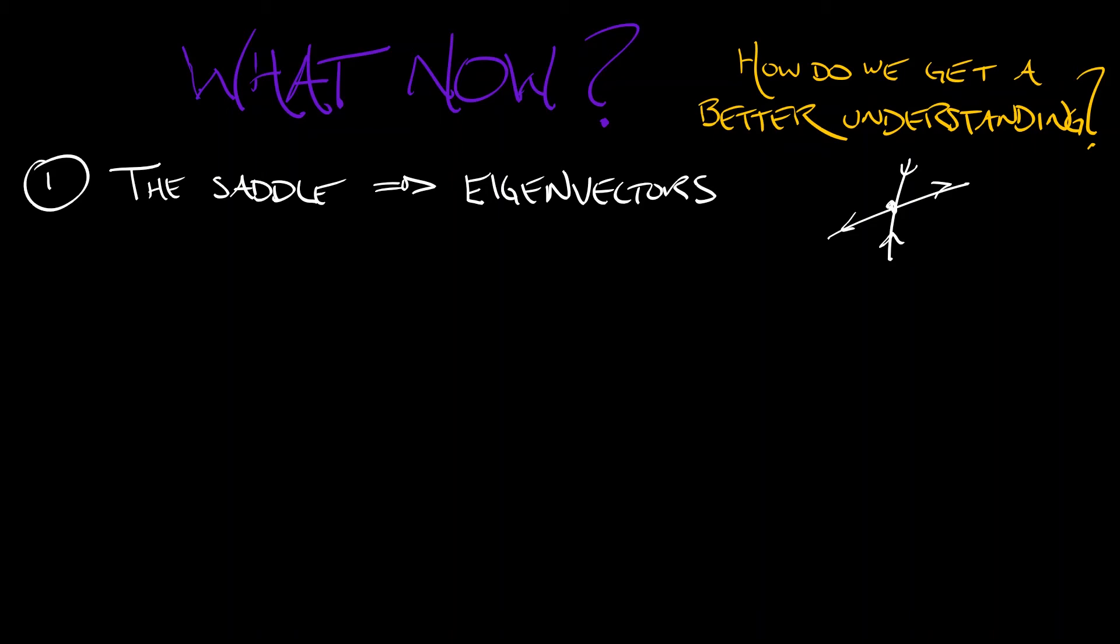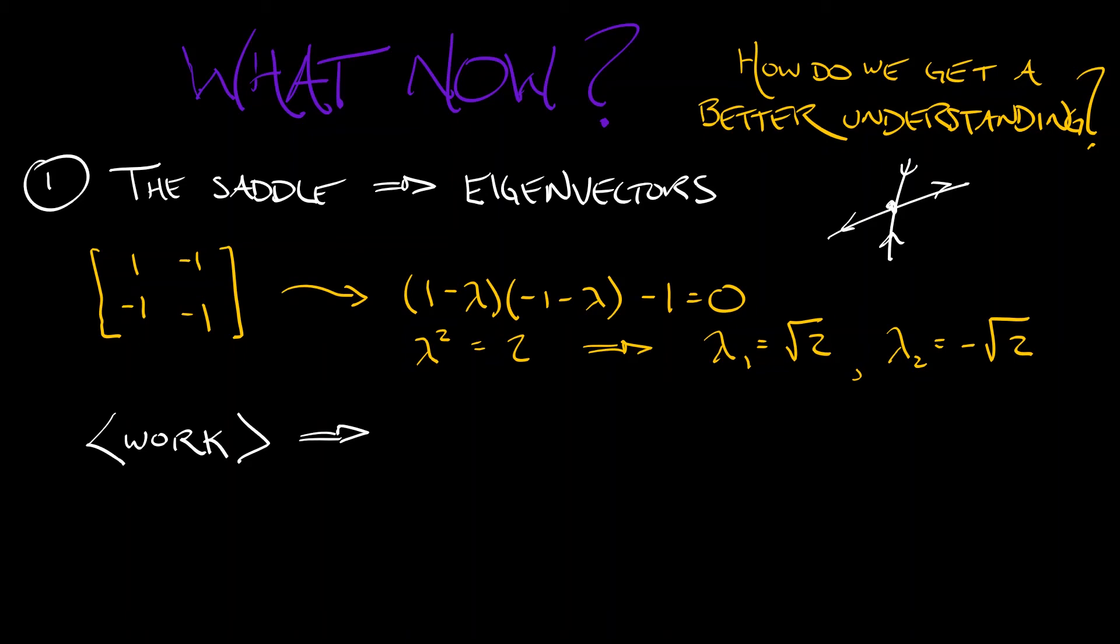So, if we do a little bit of work writing out the characteristic polynomial, we find that the eigenvalues are lambda_1 is square root of 2, lambda_2 is negative square root of 2. With additional work, we can get explicit choices for eigenvectors. And we find that that unstable eigenvector is pointed in the direction of [-1 - sqrt(2), 1]. In contrast, the stable eigenvector is pointed along the direction given by [-1 + sqrt(2), 1].